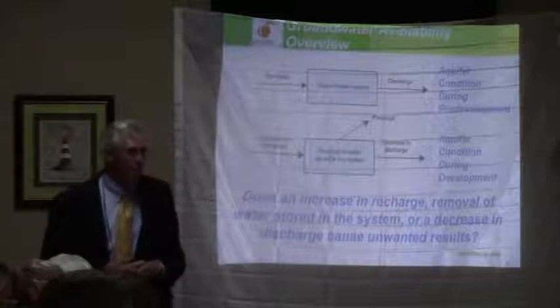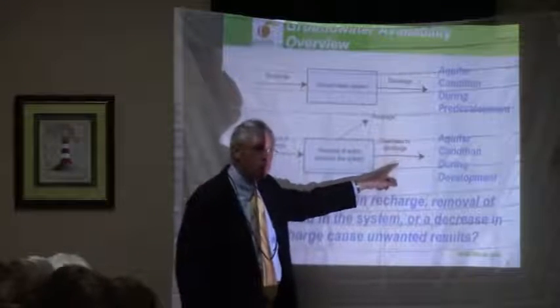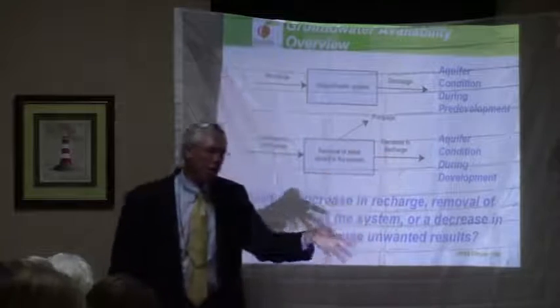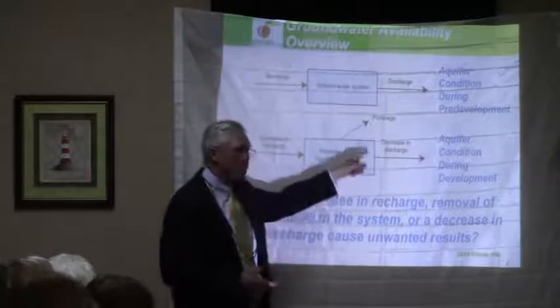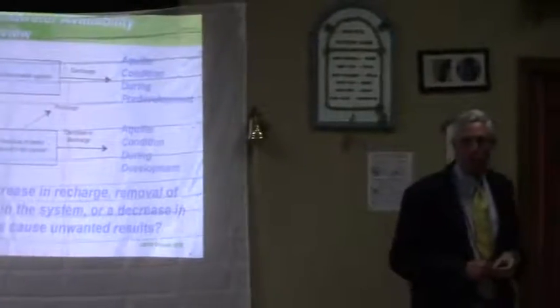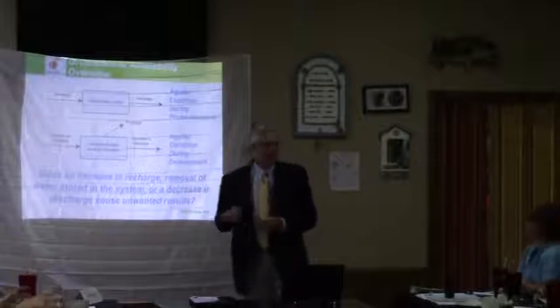The question we have to ask is: does the increase in recharge, removal of stored water, and decrease in discharge cause an unwanted result? For example, the discharge may be the deep groundwater discharge to a stream — what's called base flow. When we pump the aquifer, we decrease the discharge to the stream, so we decrease the base flow. That was also a metric we used: we didn't want to decrease the base flow more than 40% from where it had been. In some of the coastal plain aquifers, that was what drove the sustainable yield — the decrease in base flow. For other aquifers, it was the drawdown.